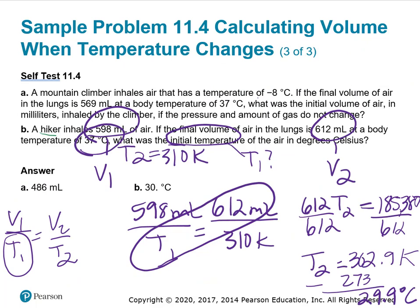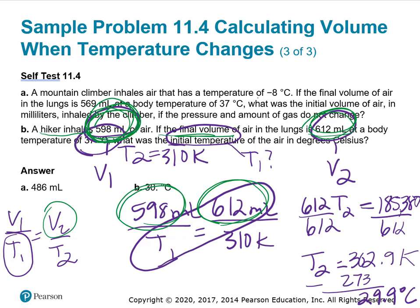Let's look at the second question. A hiker inhales 598 milliliters of air. If the final volume in the lungs is 612, that's my V2. So 598 is my initial volume, and 612 is V2 at a body temperature of 37. So my T2 is 37 plus 273, which is 310.